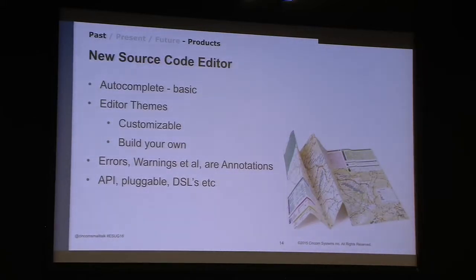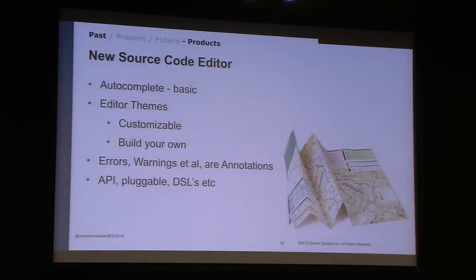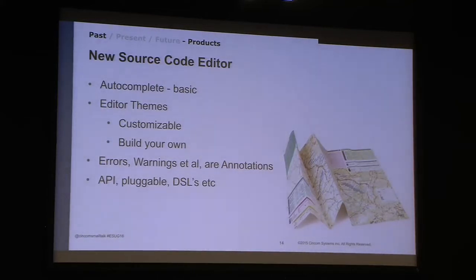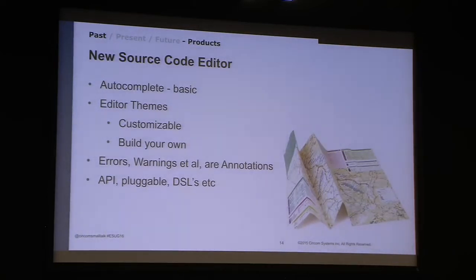Another thing in the new source code editor: when you compile a method, all the errors and warnings are annotations. I like to say this is nothing or this is everything — it's a small change but it has big implications. Since the beginning of Smalltalk, when you compile a method and get errors and warnings, you'd hit escape to make them go away. If you slipped and hit the wrong key, you'd have all that embedded in your code and have to manually remove it. With annotations, that's no longer an issue. A decades-old problem in Smalltalk is now gone with this change, and developers using the product day to day really appreciate that.